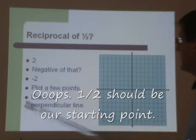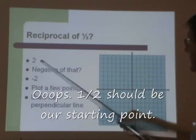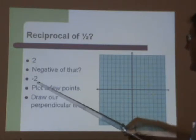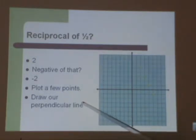This should be negative 2. We started with one-half, we flip that over, that got us 2, and then we took a negative of that, and it gives us negative 2 as the new slope.